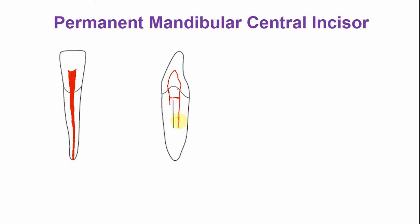The pulp canal gradually tapers in the apical one-third area and opens at the root apex. But sometimes there is a buccal opening of the canal as well.